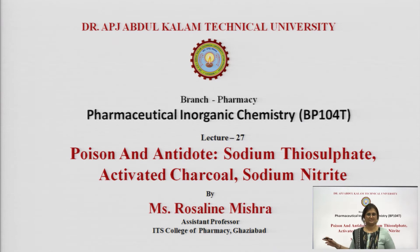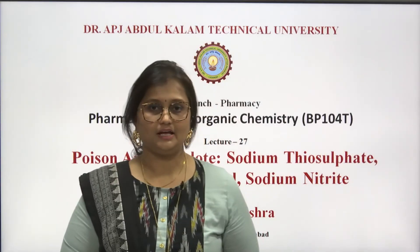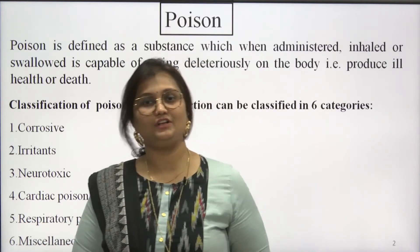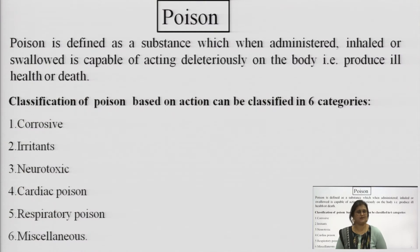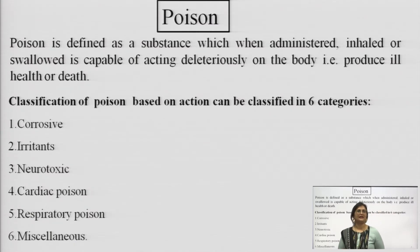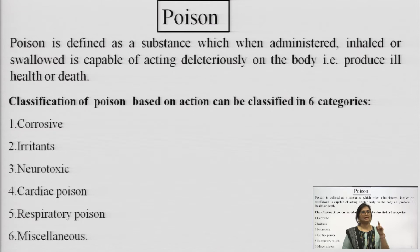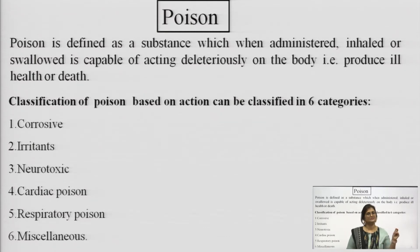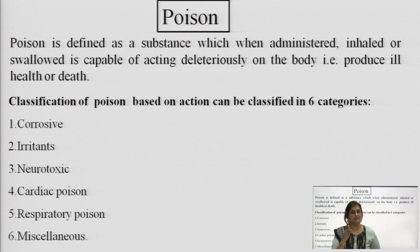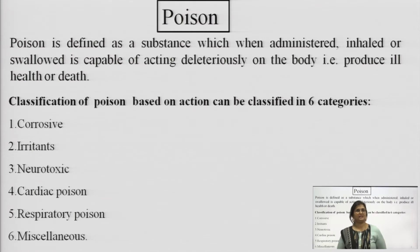We shall be dealing with each of these drugs in detail. First we shall see about poison and then learn about antidotes. Poison is defined as any foreign substance which when administered, inhaled, or swallowed is capable of acting deleteriously on the body. They produce ill health or sometimes might also lead to death.